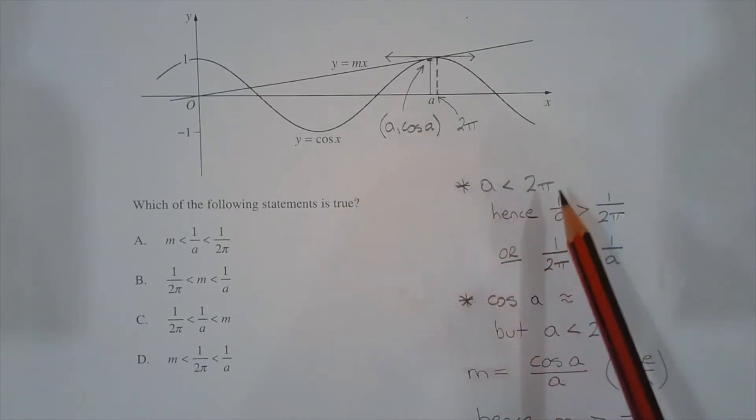Taking the reciprocal of both sides, reversing the inequality symbol, we get 1 over a is greater than 1 over 2π, or 1 over 2π is less than 1 over a.